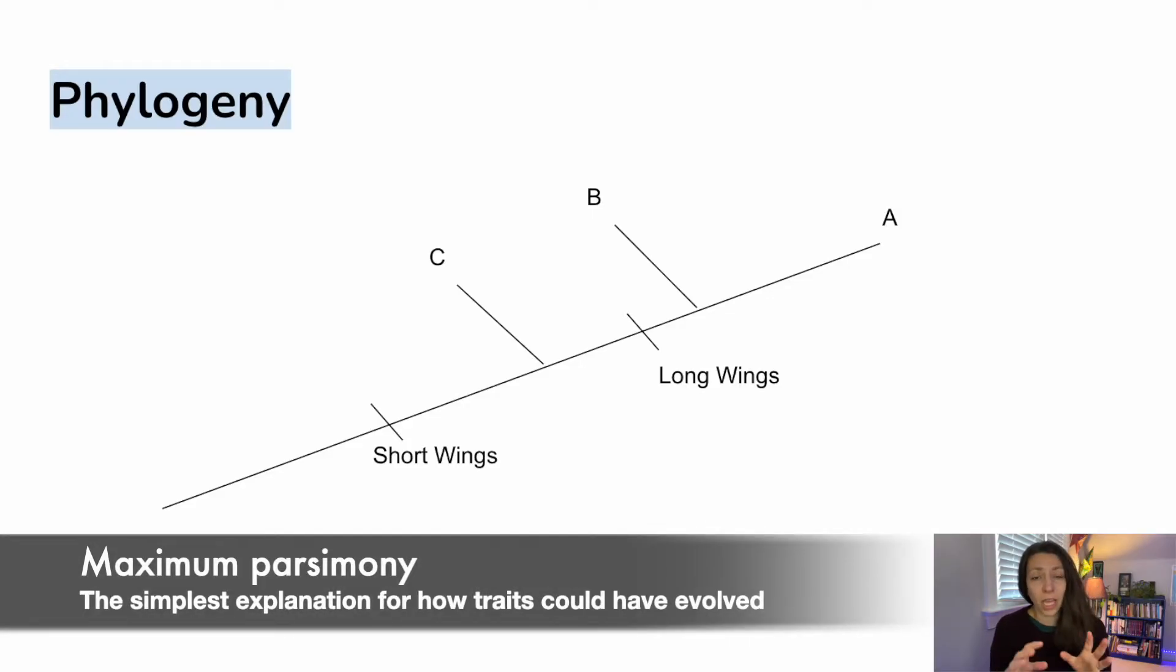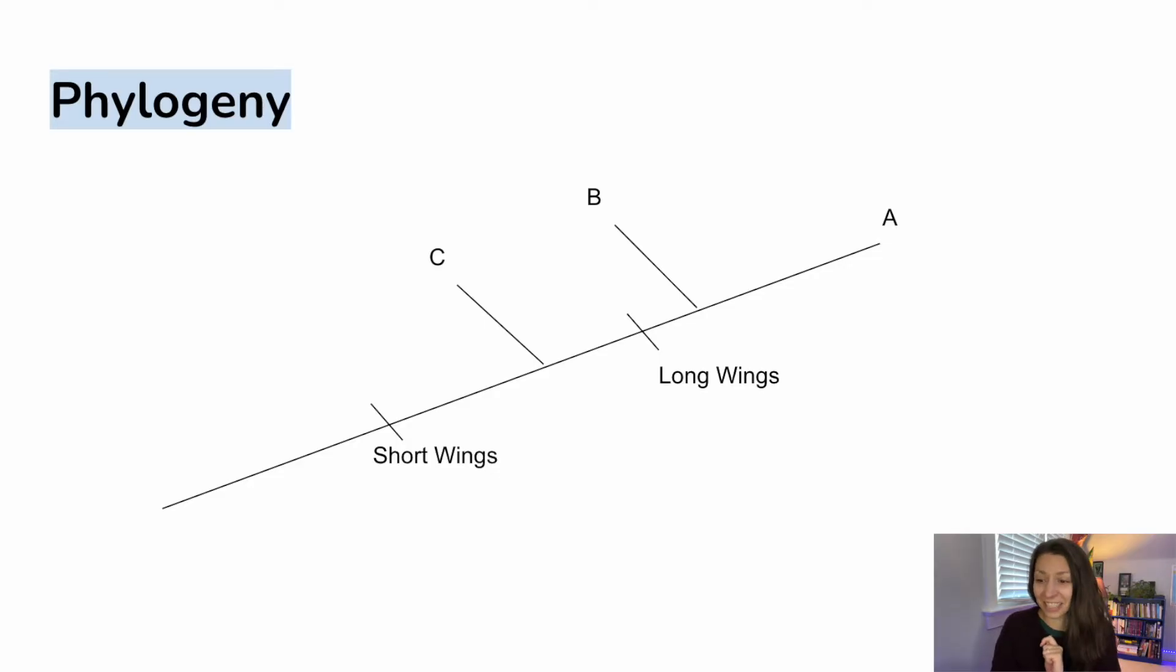It means that in most cases, a trait will usually evolve just one time instead of multiple times in multiple different branches. So we want to create the simplest possible explanation for how these organisms could be related to each other. And don't worry, you'll see what I mean in just a little bit.